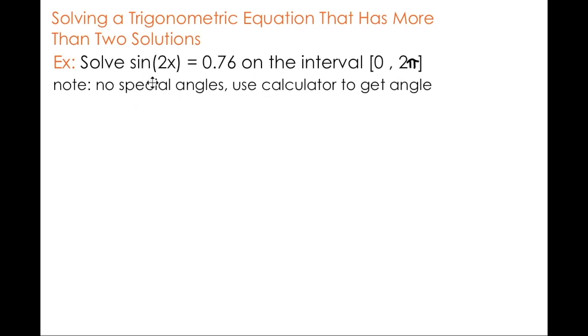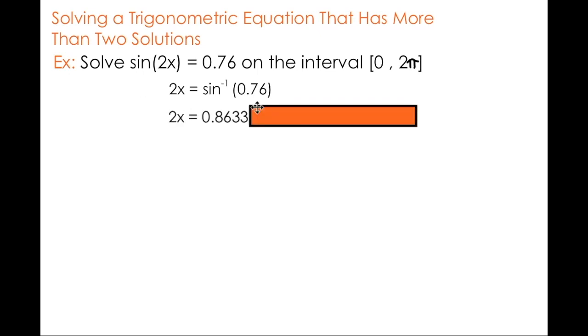So the best approach here would be to take the sine inverse in order to determine at least one of the angles that satisfies this equation. So when I take the sine inverse of both sides, I effectively undo the sine operation on the left side, which results in this expression. The sine inverse of 0.76 gives me approximately 0.8633.